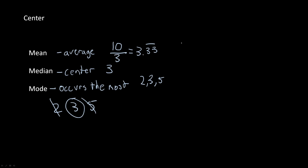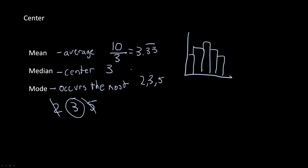As a broader example, if we had a histogram, we can use these three different forms of central tendency to describe it. We can say that the mean is going to be around the center, the median would also be around the center, and the mode is also right there because it's the highest frequency of the graph — the value that occurs the most.